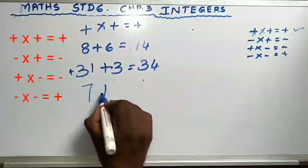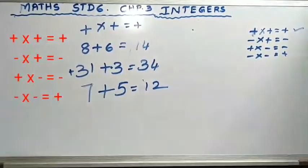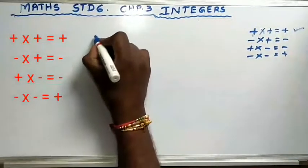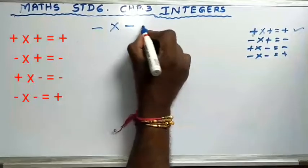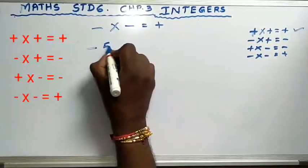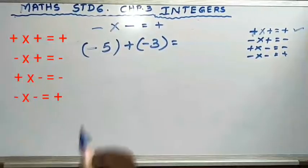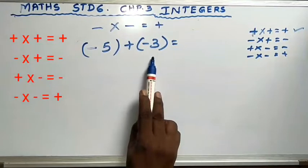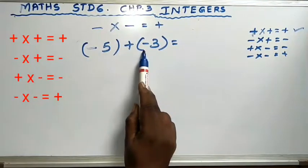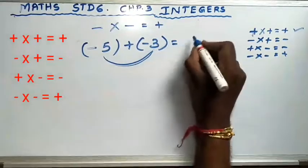Similarly, 7 plus 5 is 12. Now let's change to minus into minus, which is again plus. So you have to add. Minus 5 plus minus 3 — on the left side minus 5, on the right side minus 3. So minus into minus is plus, meaning you add both numbers: 5 plus 3 is 8. But which number is greater? 5. And 5 has a minus sign, so you write minus 8.